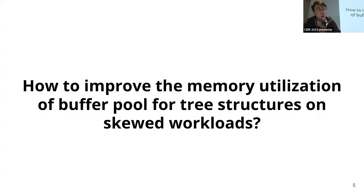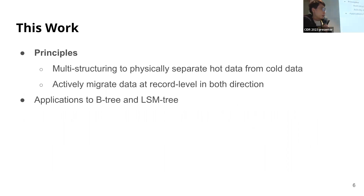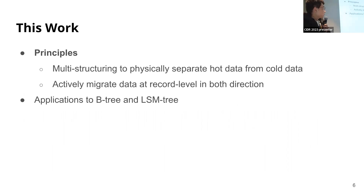In this work, we seek to answer: how do we improve the main memory utilization of buffer pools for tree structures on skewed workloads? Our answer is to follow two principles. One is to embrace multi-structuring to physically separate hot data from cold data, much like in LSM tree design. But we further actively migrate data at the record level in both directions. I'll explain these two applications to B-tree and LSM tree.